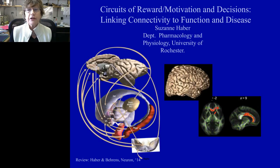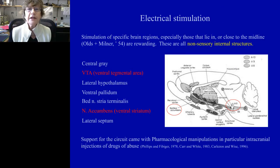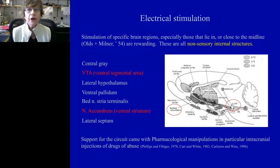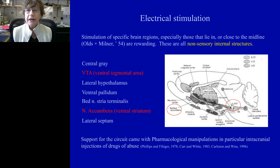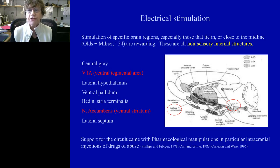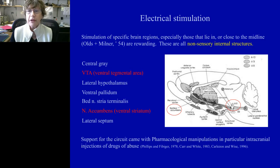But before we start, just a little bit of history. The idea that the reward circuit or motivation lies embedded within the brain — and is not really sensory driven but internally driven — was first described by a very classic study by Olsen Miller, in which they passed electrodes into various regions of the brain and asked the animal to work for particular stimulation in those areas. A number of internal structures were highly activated during these stimulation experiments.